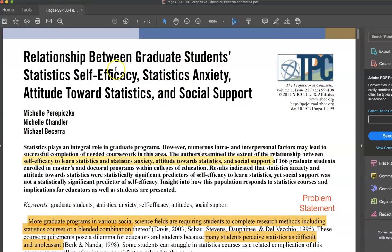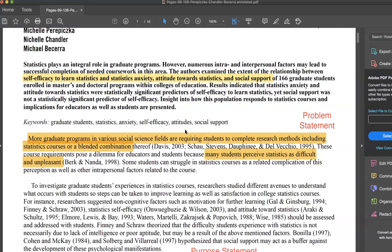I'll share this article, which I've annotated as well. So this particular study is looking at the relationship between graduate student statistics self-efficacy and statistics anxiety, attitude towards statistics, and social support.